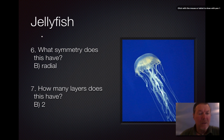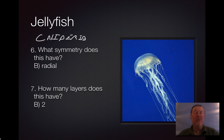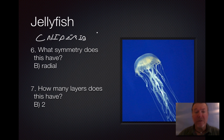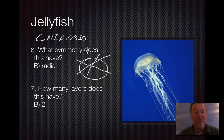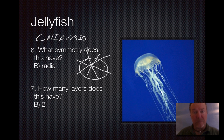Jellyfish falls into the Cnidaria. Cnidarians are very simple organisms with no real nervous system. They have radial symmetry, meaning no matter which way you cut them they are the same — think of a radial tire. They have two cell layers.